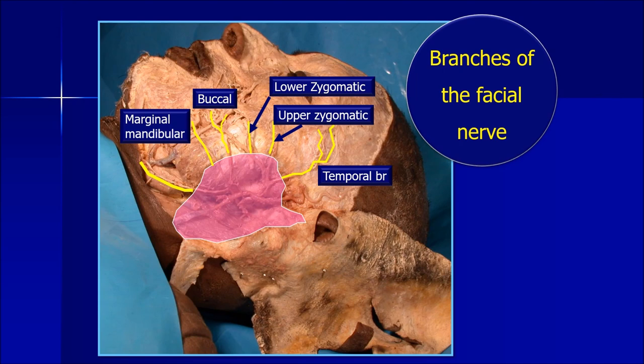Finally, the last nerve shown here — slightly thicker — is the cervical branch of the facial nerve, which goes to the neck. These are the 5 major branches of the facial nerve that ultimately emerge from the anterior margin of the parotid gland: temporal, zygomatic, buccal, marginal mandibular, and cervical.